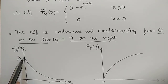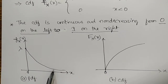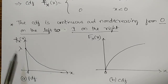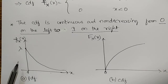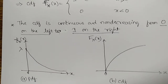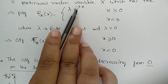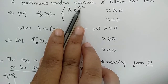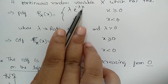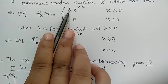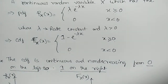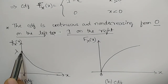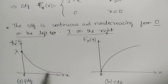By substituting different values of x into the pdf equation, we obtain the exponential graph. At x = 0, the value is λe^(−λ·0) = λ·1 = λ, and the function decreases exponentially as x increases.